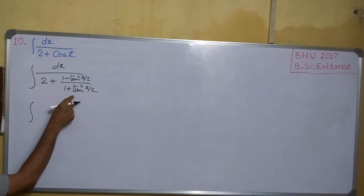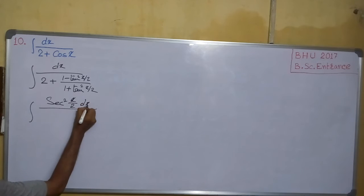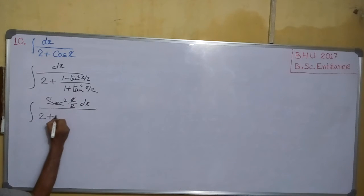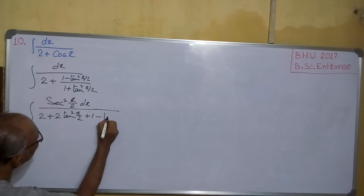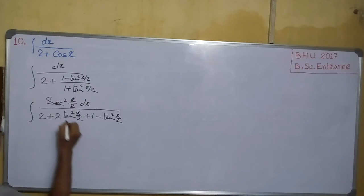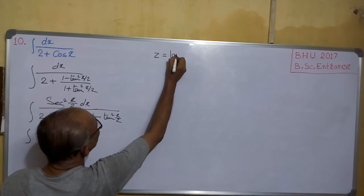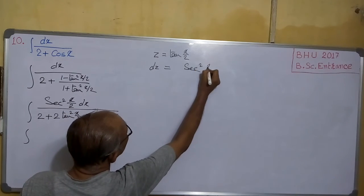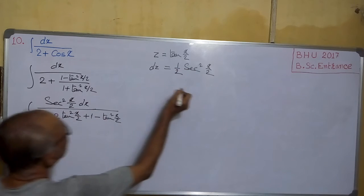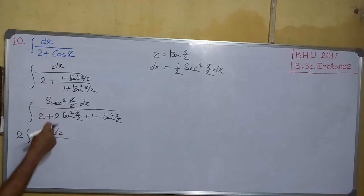We write cosx as (1 - tan²(x/2)) / (1 + tan²(x/2)), and dx becomes sec²(x/2) dx. Substituting, the denominator becomes 2 + 2tan²(x/2) + 1 - tan²(x/2), which simplifies. Setting z = tan(x/2), we get 3 + tan²(x/2), and we can write 3 as (√3)², giving us the form 3 + z².